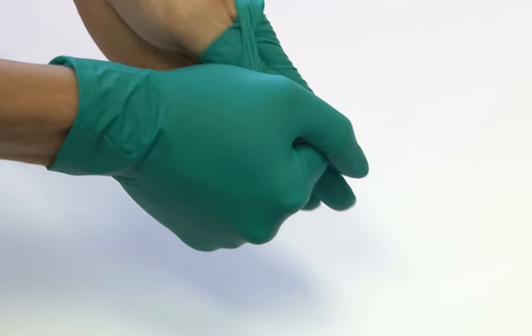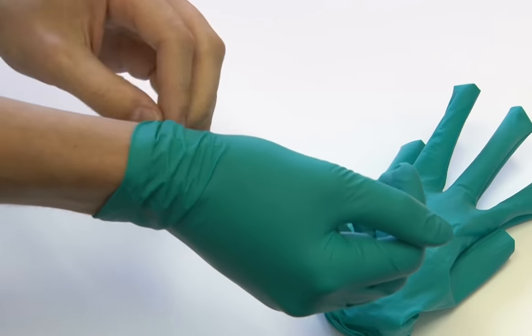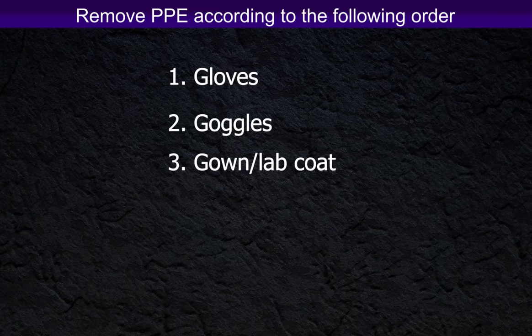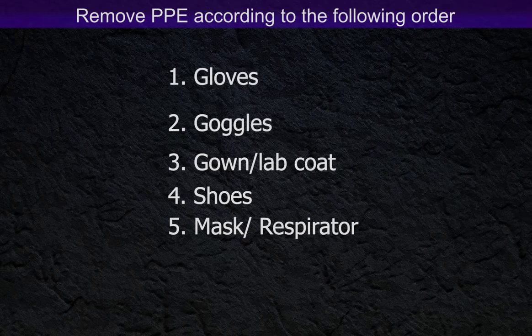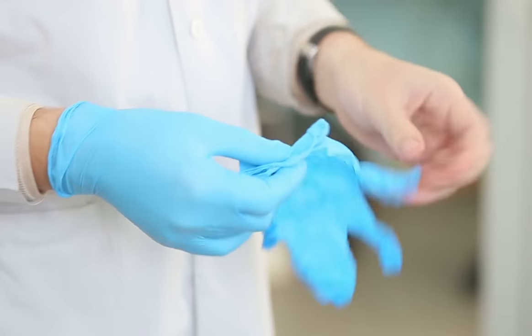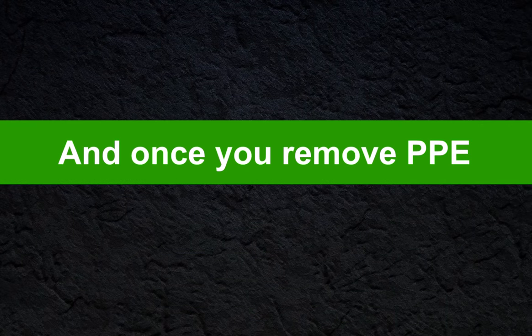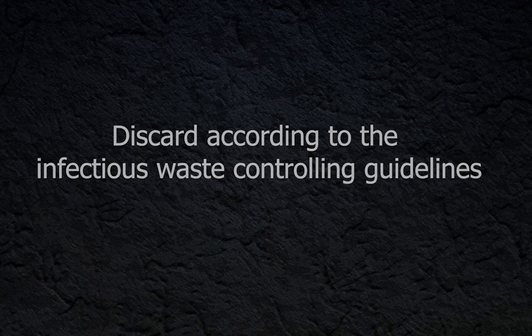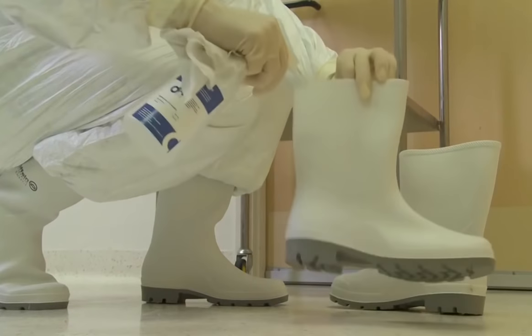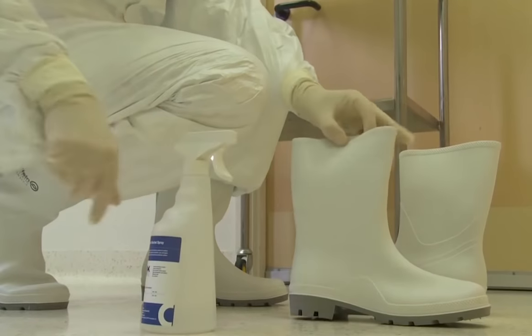How to remove personal protective equipment once you have used it? It is recommended to remove personal protective equipment in the following order: gloves, goggles, gown or lab coats, shoes, masks, and respirators. Since gloves are contaminated more heavily than other PPE, you should remove them first. Once you remove personal protective equipment, discard according to the infectious waste control guidelines. Reusable PPE should be immediately cleaned after each use and stored in a proper way.